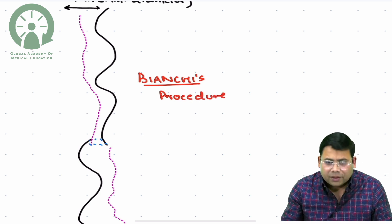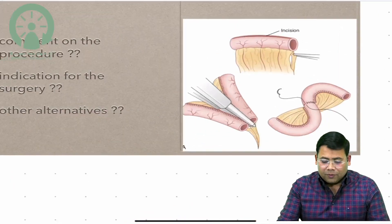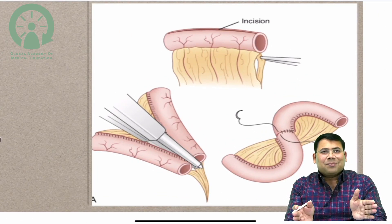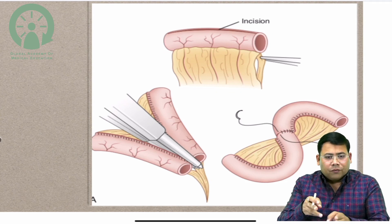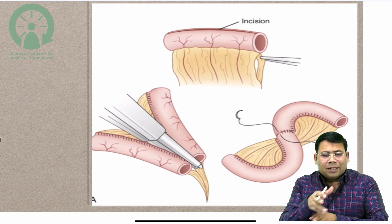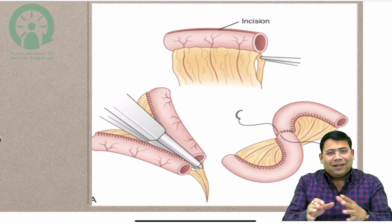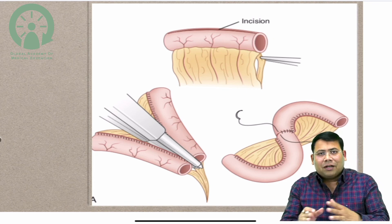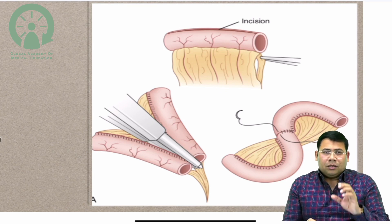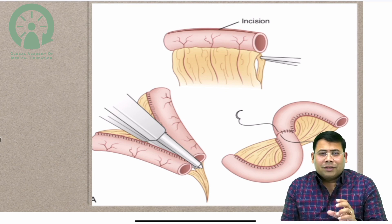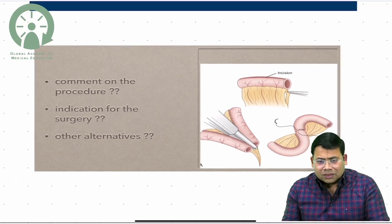You can see in the image that the mesentery has been split. Once the mesentery is split, you introduce a linear cutting GI stapler, divide it, and perform anastomosis. This bowel will increase in diameter back to normal over time, so there is no concern about stenosis. This is the classical Longitudinal Incision Lengthening and Tailoring — Bianchi's procedure.